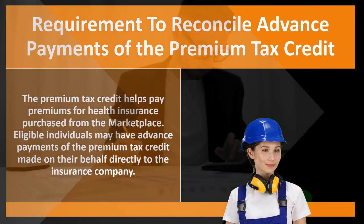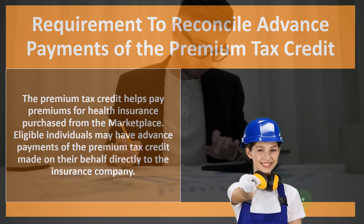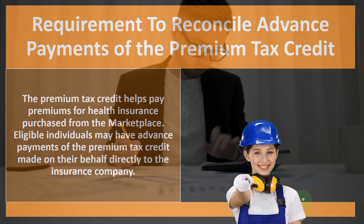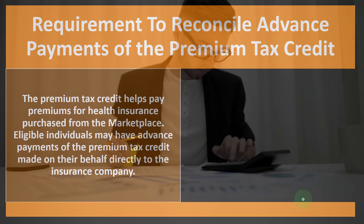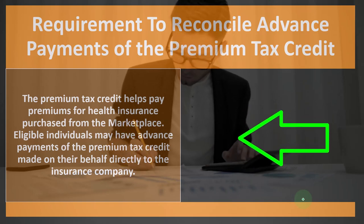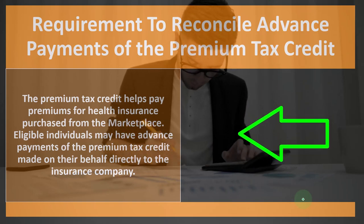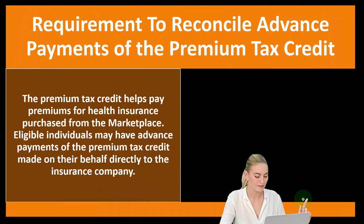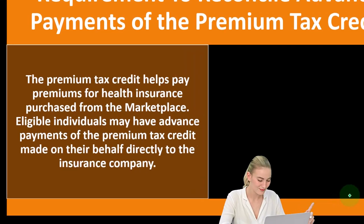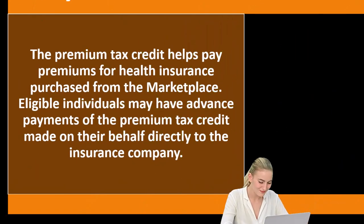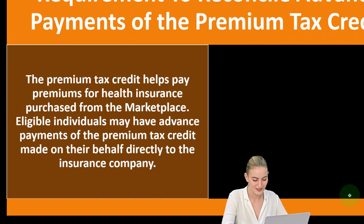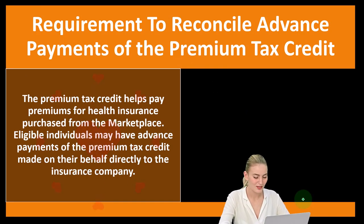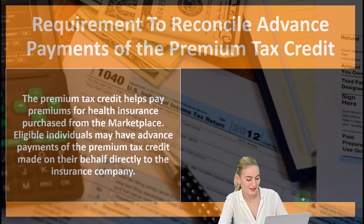Usually when we talk about tax credits, they are provided at the point in time you file the tax return. So for tax year 2022, you're going to file by April 15th or April 18th of 2023. When you file the tax return, that's when you calculate the credit. But what they've done more and more often is try to apply the credit in the tax year it's being applied to, in this case 2022, instead of waiting until you file in 2023. In order to do that, we have to have some kind of advanced estimate.